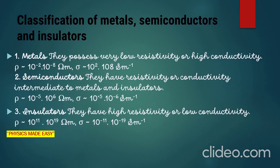We can classify metals, semiconductors, and insulators on the basis of their conductivity. Metals possess very low resistivity, so they have high conductivity. Whereas semiconductors have high resistivity, or conductivity intermediate to metals and insulators. The resistivity for metals varies from 10⁻² to 10⁻⁸ ohm-meter, and for semiconductors, 10⁻⁵ to 10⁶ ohm-meter. Insulators have very high resistivity or low conductivity.